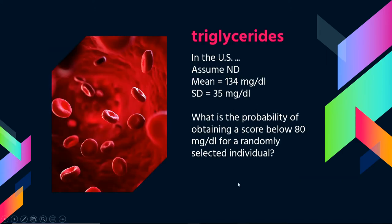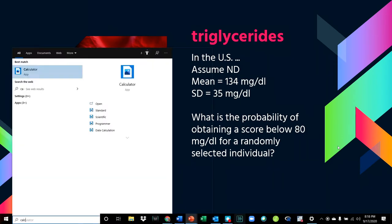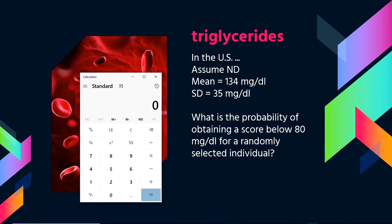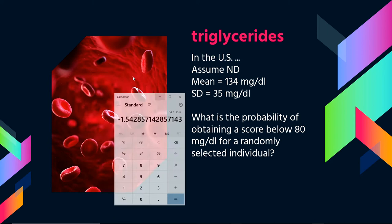Here we take 80, subtract 134, and divide by 35. Negative 54 divided by 35 gives us a Z-score of negative 1.54. So this score is 1.54 standard deviations below average.